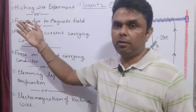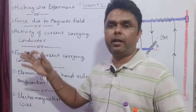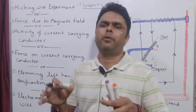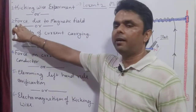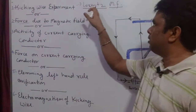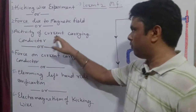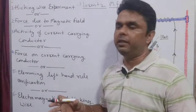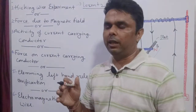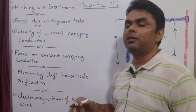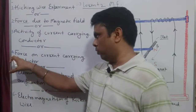Now the second one: what is the force due to magnetic field? Force due to magnetic field. And the third one: activity of a current-carrying conductor. Now we are going to study the current-carrying conductor and what happens to it. So these three kicks we have found.